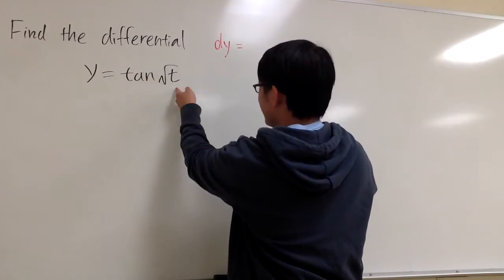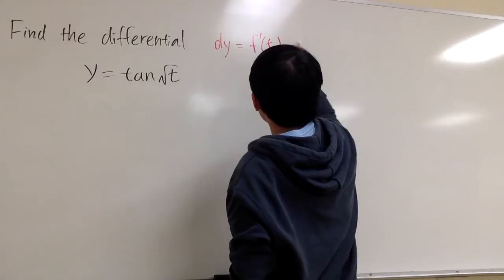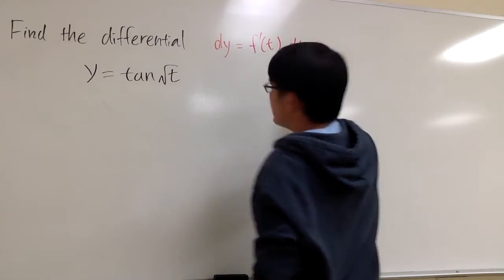When you look at this, it's in terms of t, but the notation is f prime of t, and we multiply by dt on the side.